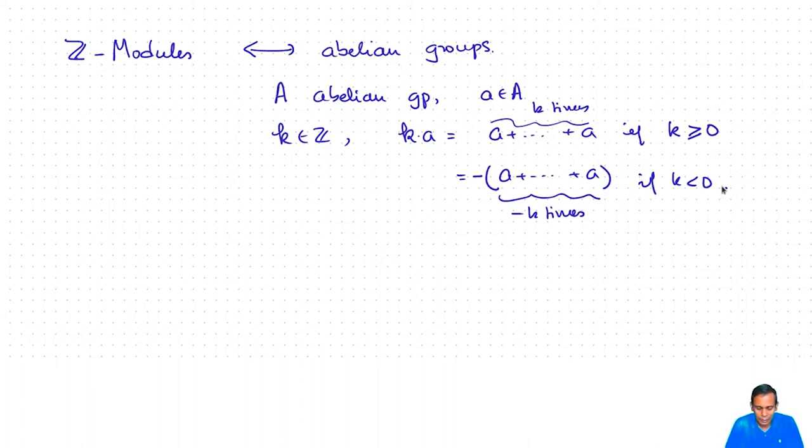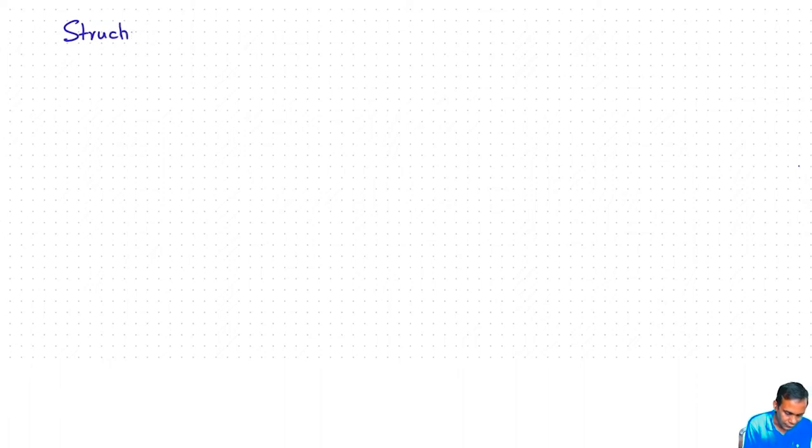Let us see what the structure theorem says for Z-modules. If R is Z, then the structure theorem you get is the structure theorem for finitely generated abelian groups.